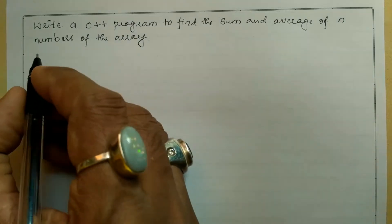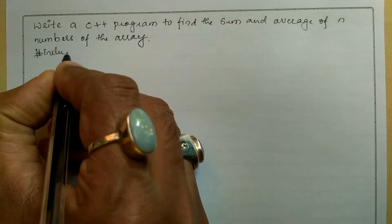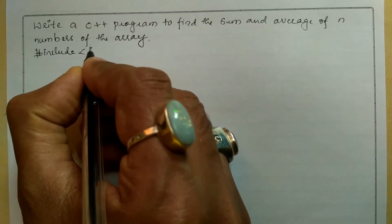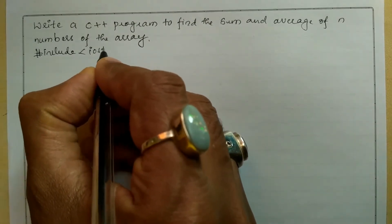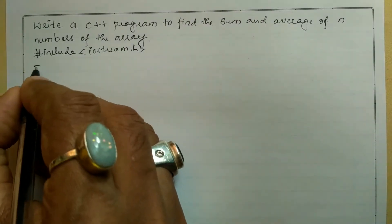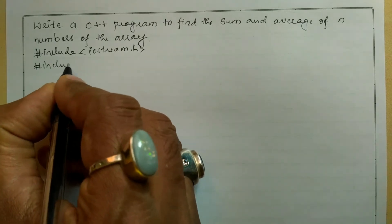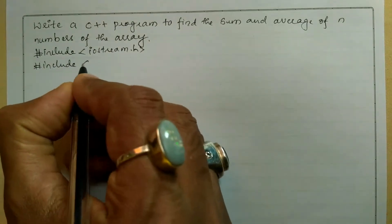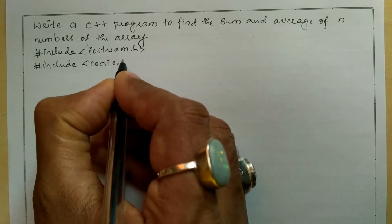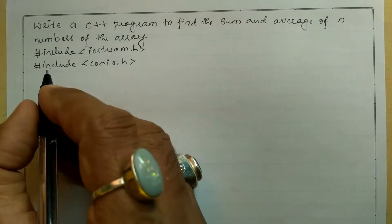Let us write the preprocessor directives: hash include in angular brace I am going to write iostream.h header file, and the next preprocessor directive is hash include in angular brace we will write console input output dot h header file.